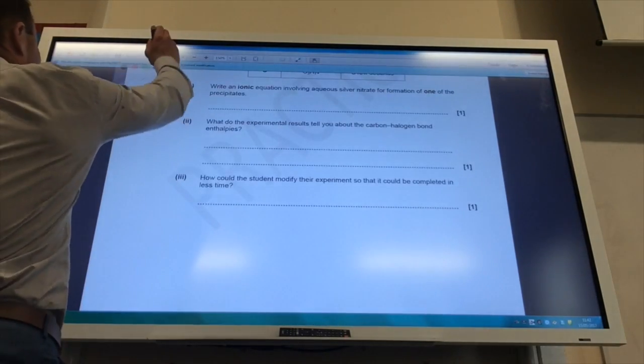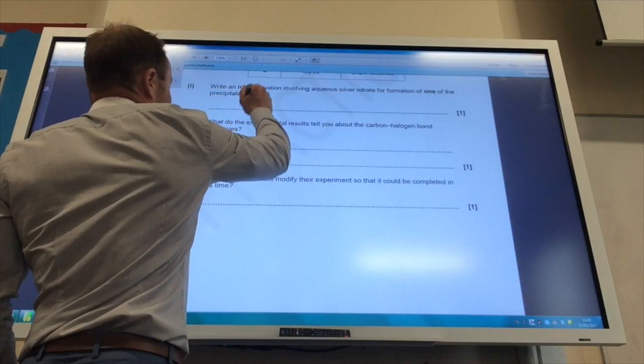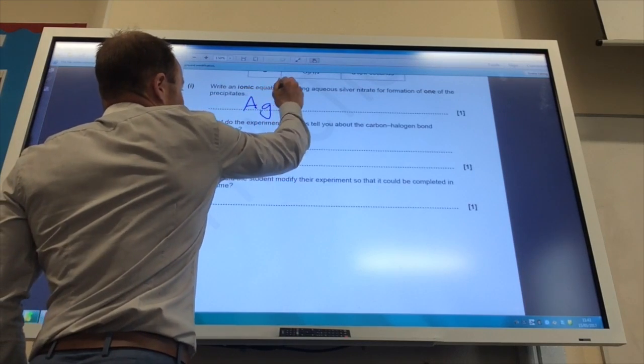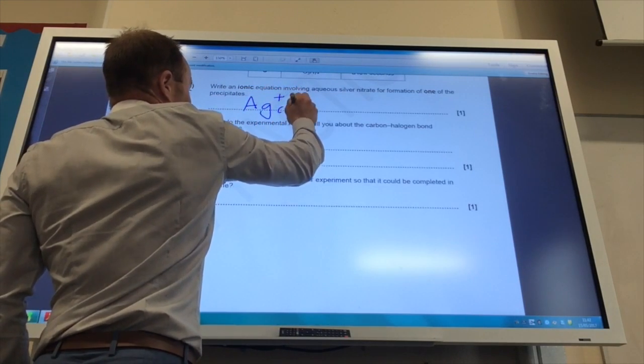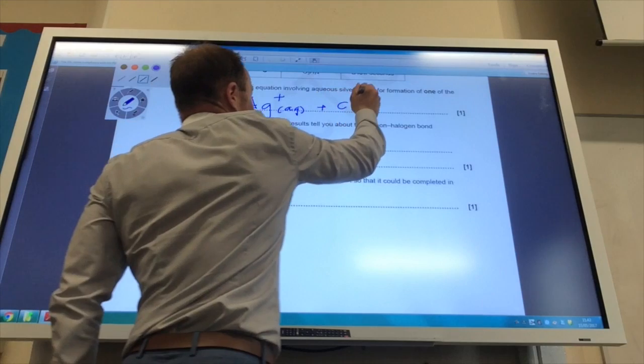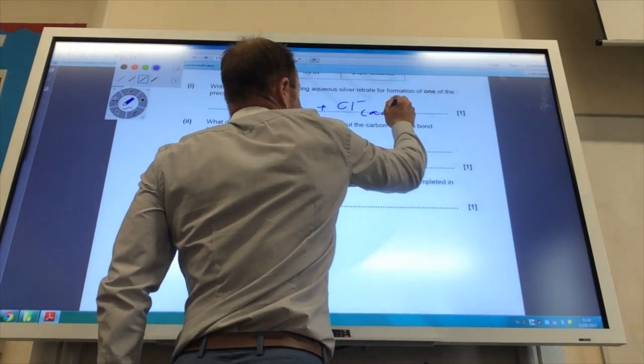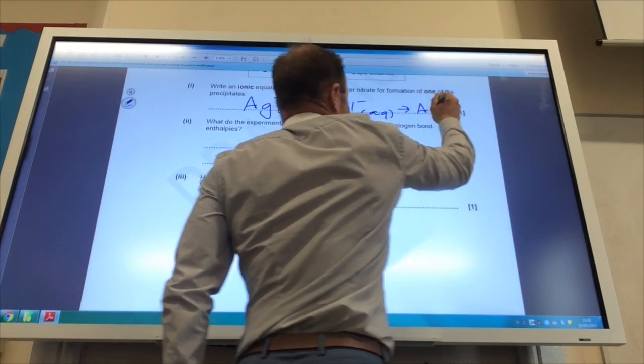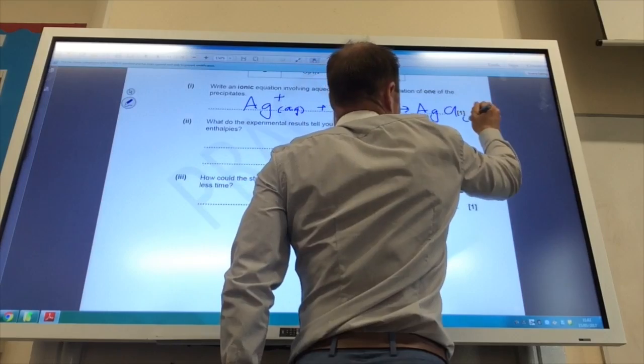Write an ionic equation involving aqueous silver nitrate for the formation of one of the precipitates. Let's do that. It doesn't matter which one you do, but Ag+ aqueous plus Cl- aqueous is going to give me AgCl solid.